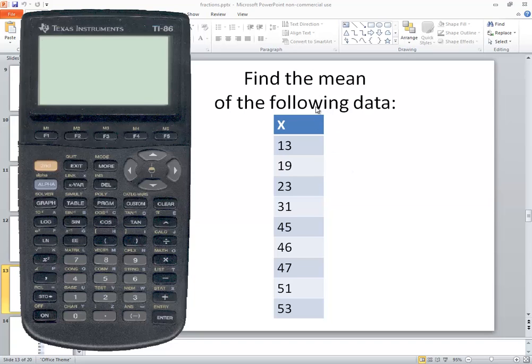Let's take a look at finding the mean of the following data on a TI-86 calculator. We want to input our numbers first, and as weird as it seems, you can go into two different places for that.